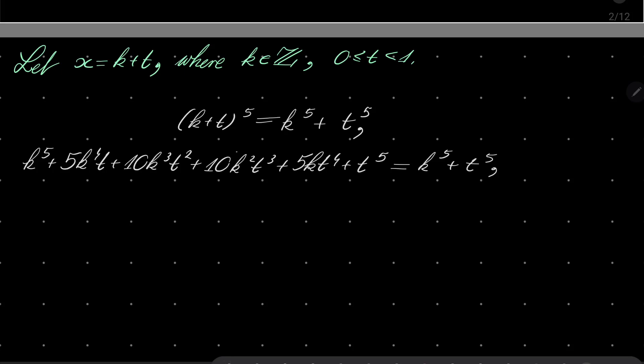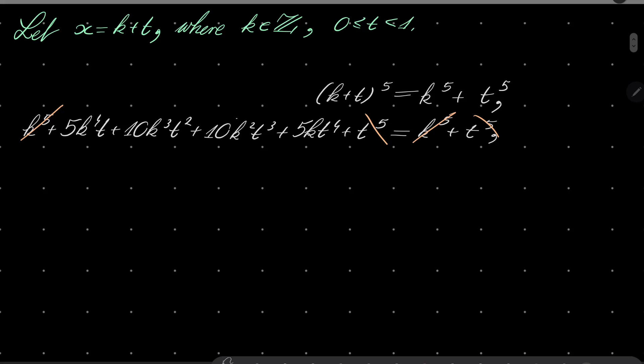Right. What else? Let's see. k to the 5th, k to the 5th, t to the 5th, t to the 5th, gone. Moreover, we can safely divide or we can factor out 5kt on the left hand side. And we are left with k cubed plus 2k squared t plus 2kt squared plus t cubed equals 0.